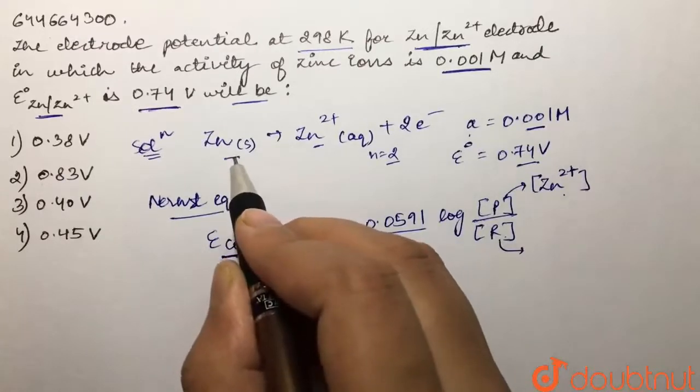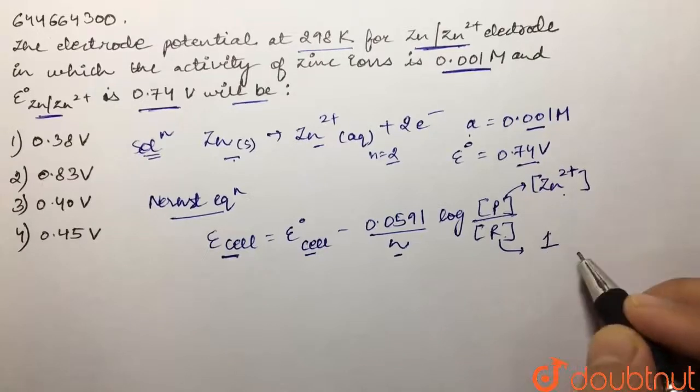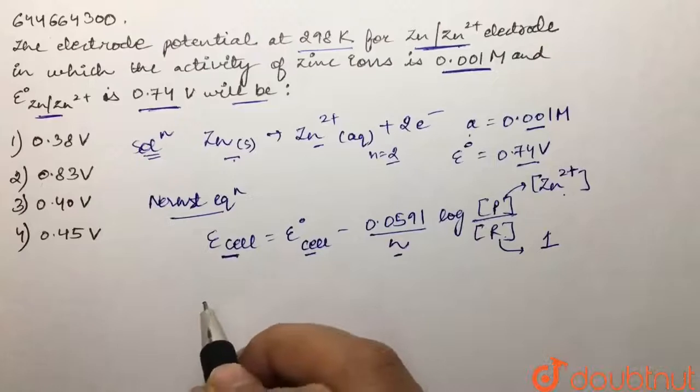Then in reactants we have solid. Pure solids and pure liquids are not considered in our reaction quotient value, why? Because their concentration practically remains constant. So we're going to take one instead over here.